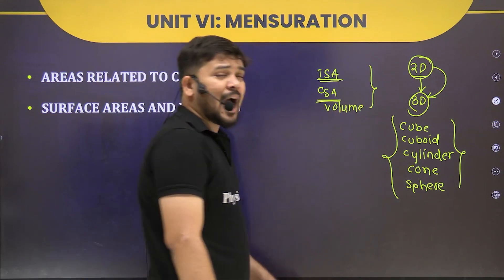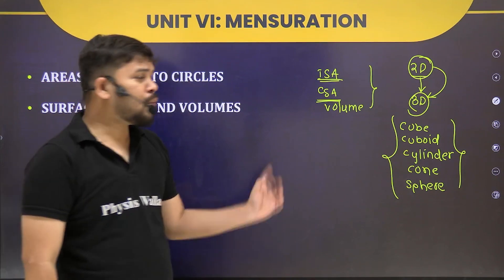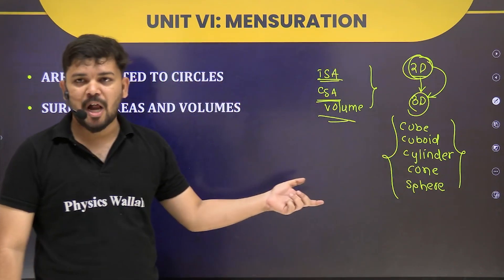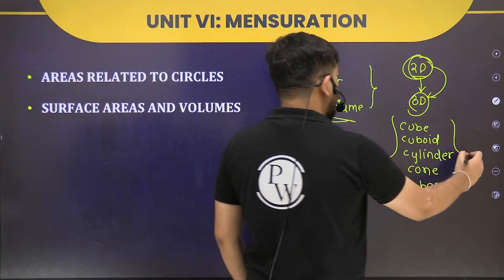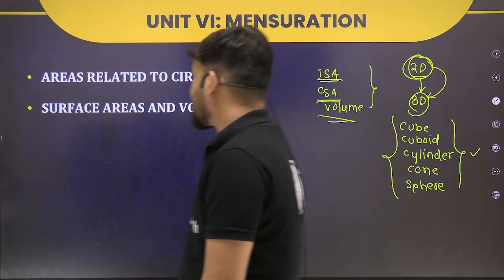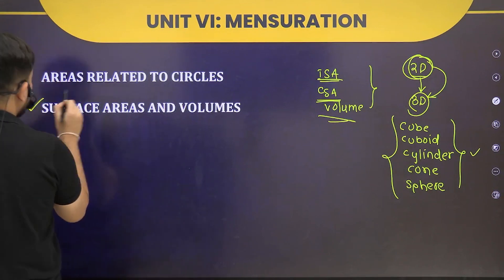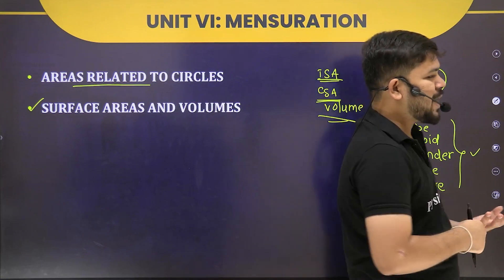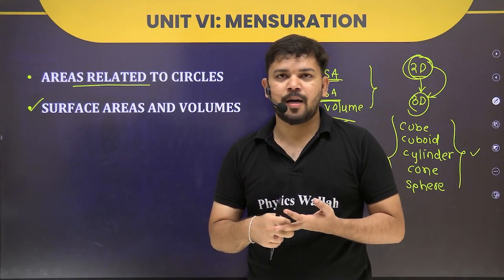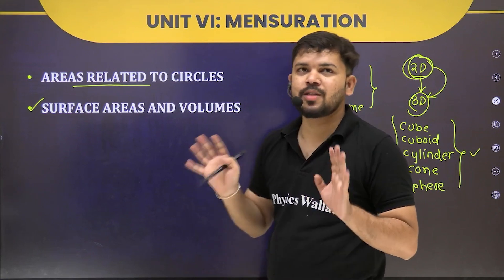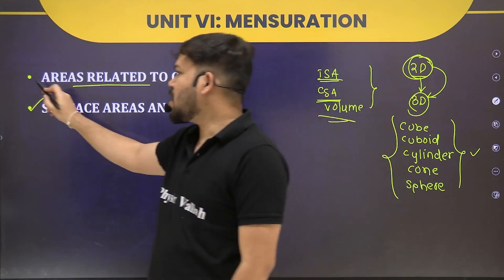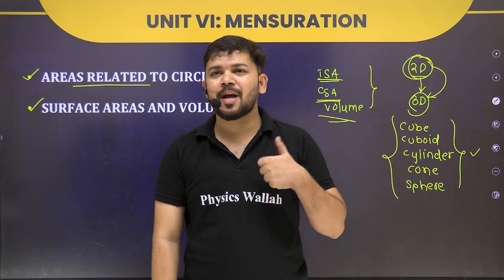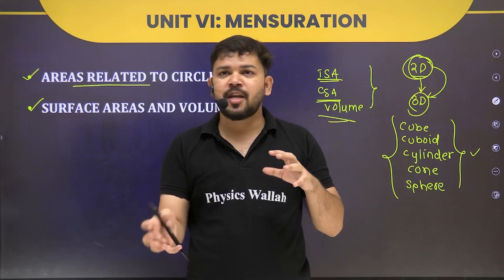We will also see how volume relates to 3D objects and how to derive 3D formulas from 2D ones. Additionally, Areas Related to Circles covers minor sector, major sector, line segment, and related concepts. Once you understand how the formulas come from 2D geometry, mensuration becomes a beautiful chapter.